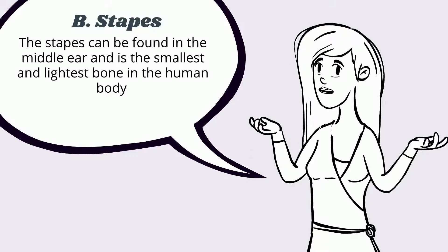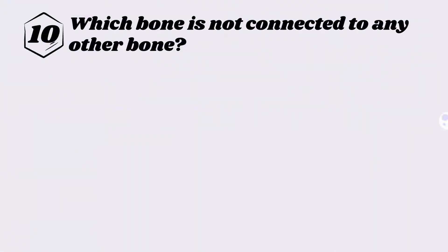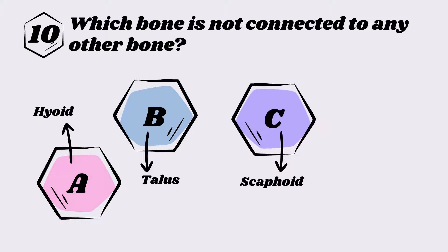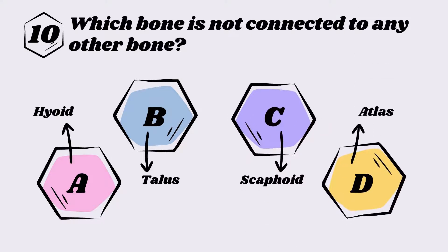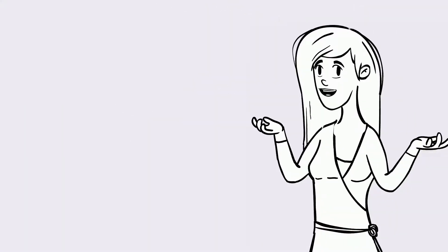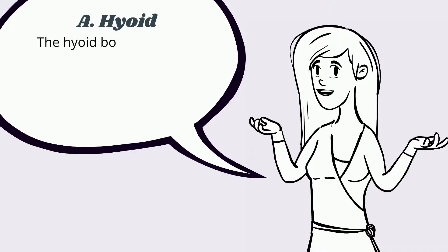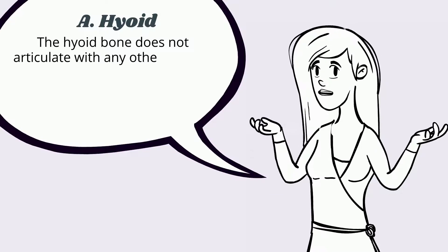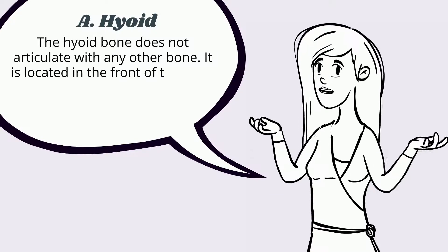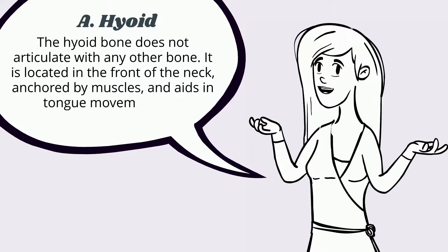Question ten: Which bone is not connected to any other bone? A) Hyoid, B) Talus, C) Scaphoid, D) Atlas. The answer is A, hyoid. The hyoid bone does not articulate with any other bone. It is located in the front of the neck, anchored by muscles, and aids in tongue movement and swallowing.